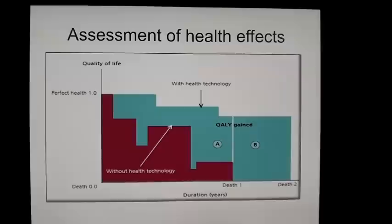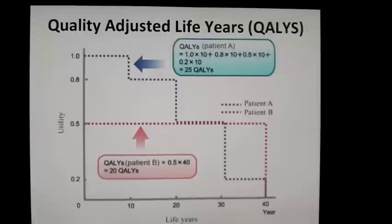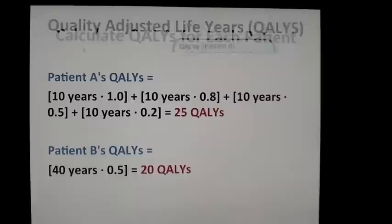So what would be the QALY? It would be the utilities of each of these states multiplied by the length of life in each of these states, and the delta QALY would be the blue area minus the red area. Here's another example of two different situations with utility as well as length of life graphed, and we can calculate the QALYs by adding up the utility times the length of life in that state — you can work it out and make sure you're able to calculate a QALY.